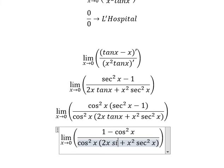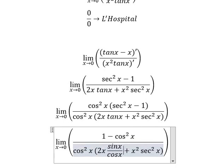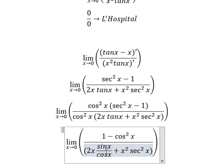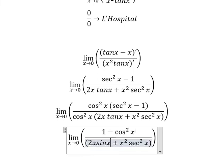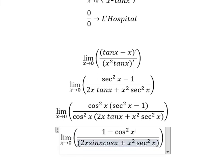Tan x is sine x over cosine x, so in this situation we have sine x cosine x. This one we have number one.